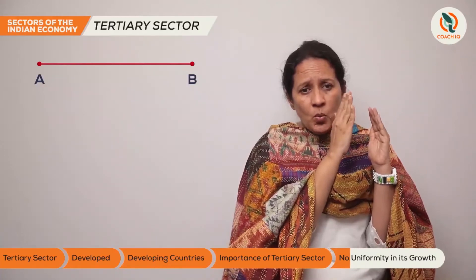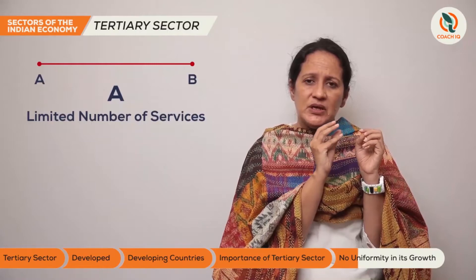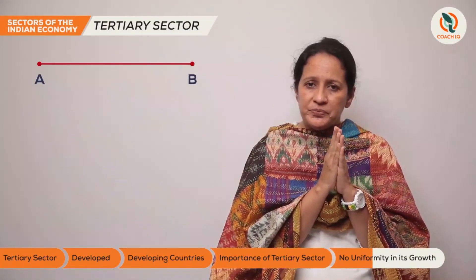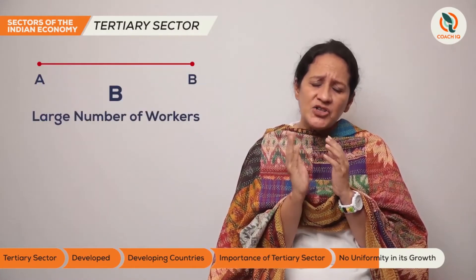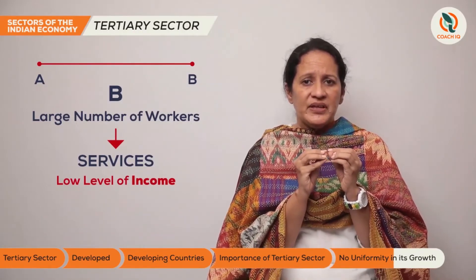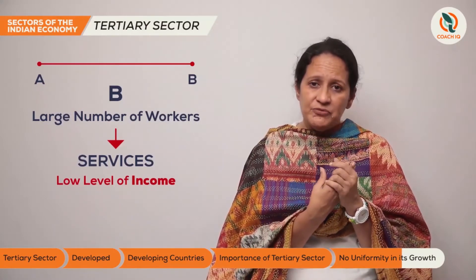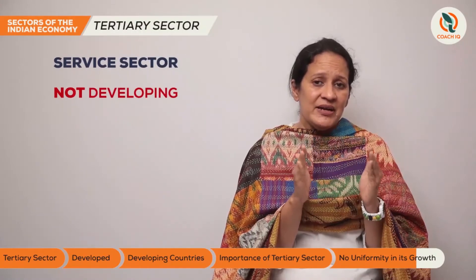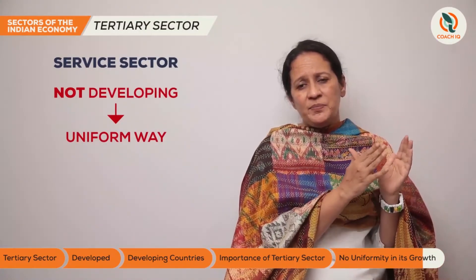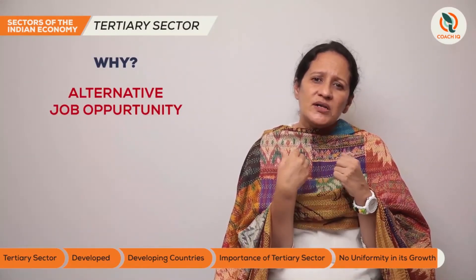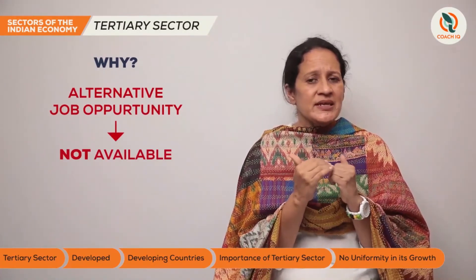Imagine a line segment with two endpoints. At one end, there are a limited number of services employing a small number of well-educated, highly skilled professionals who enjoy a high level of income. At the other end, there are a large number of workers in services that are not giving them enough income — they can barely survive. Examples include electricians, plumbers, and repair workers. So the service sector is not developing in a uniform way. Some people are earning very well, while others are not. This is because alternative job opportunities are not available.